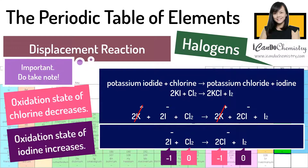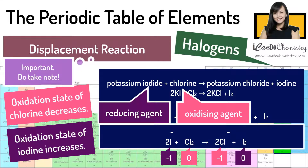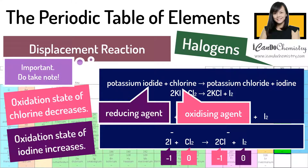Hence, chlorine has been reduced and iodide has been oxidized. Chlorine is the oxidizing agent, while potassium iodide is the reducing agent.